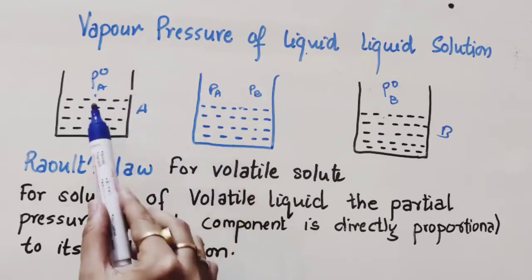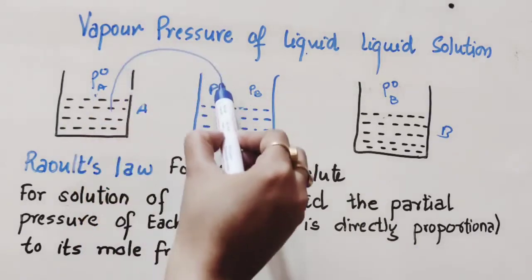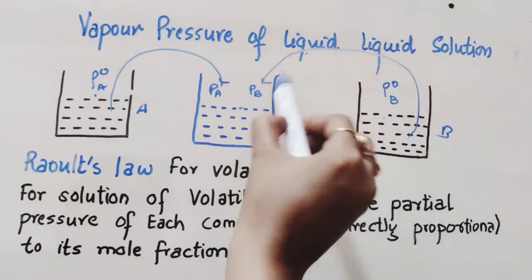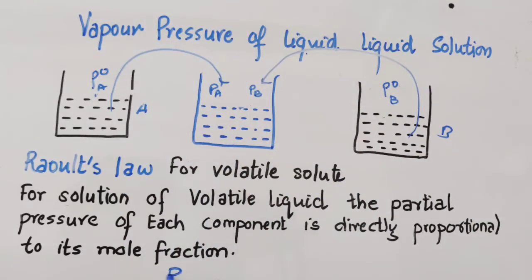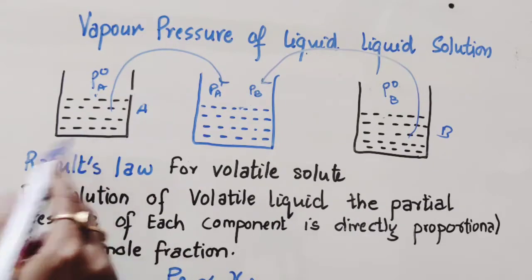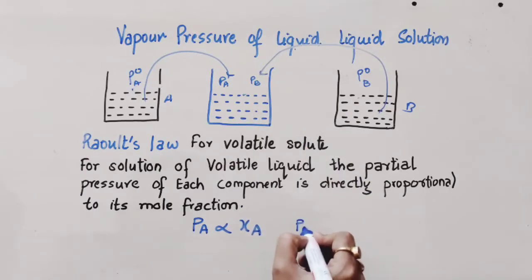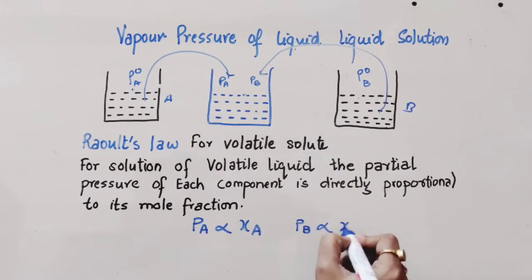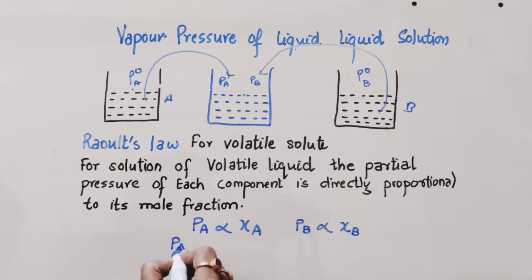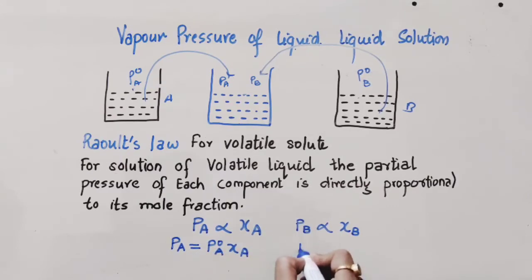If this solution is prepared by taking an amount from A and an amount from B, the pressure of A is directly proportional to its mole fraction XA which is taken from A. Similarly, the partial pressure of B is directly proportional to the mole fraction of B. If we remove this proportionality constant, then PA becomes equal to P⁰A·XA and PB becomes equal to P⁰B·XB.